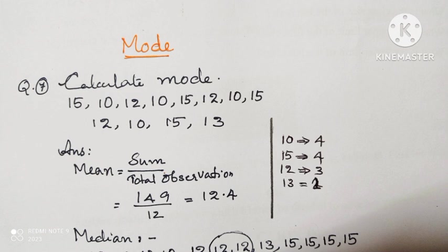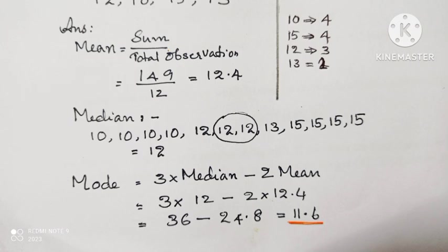Question number 7, calculate the mode of the following numbers. The numbers are given. Mode is equal to the number which are occurring maximum number of times. Here we can see 10 and 15 are repeating 4 times. Therefore, we cannot derive mode directly.